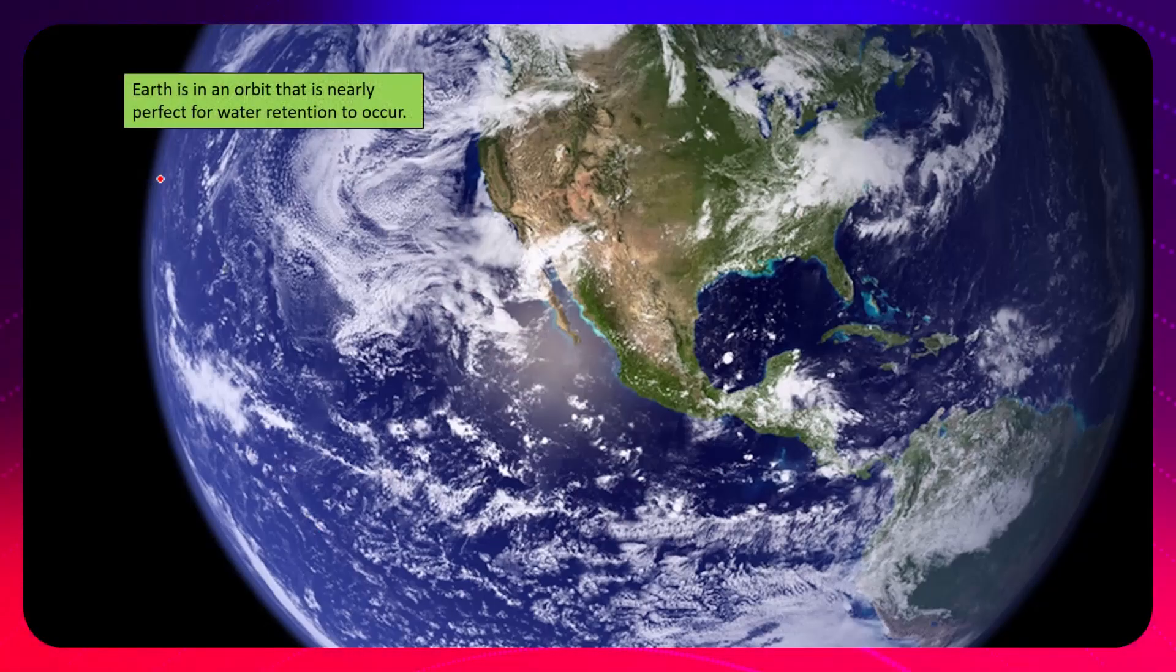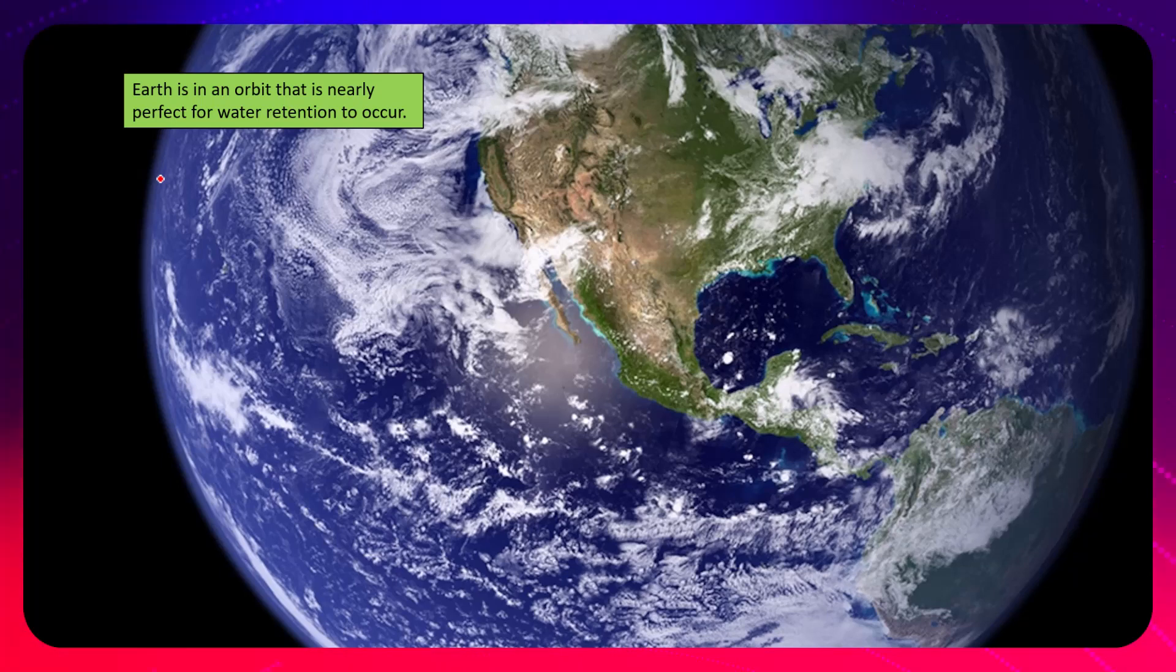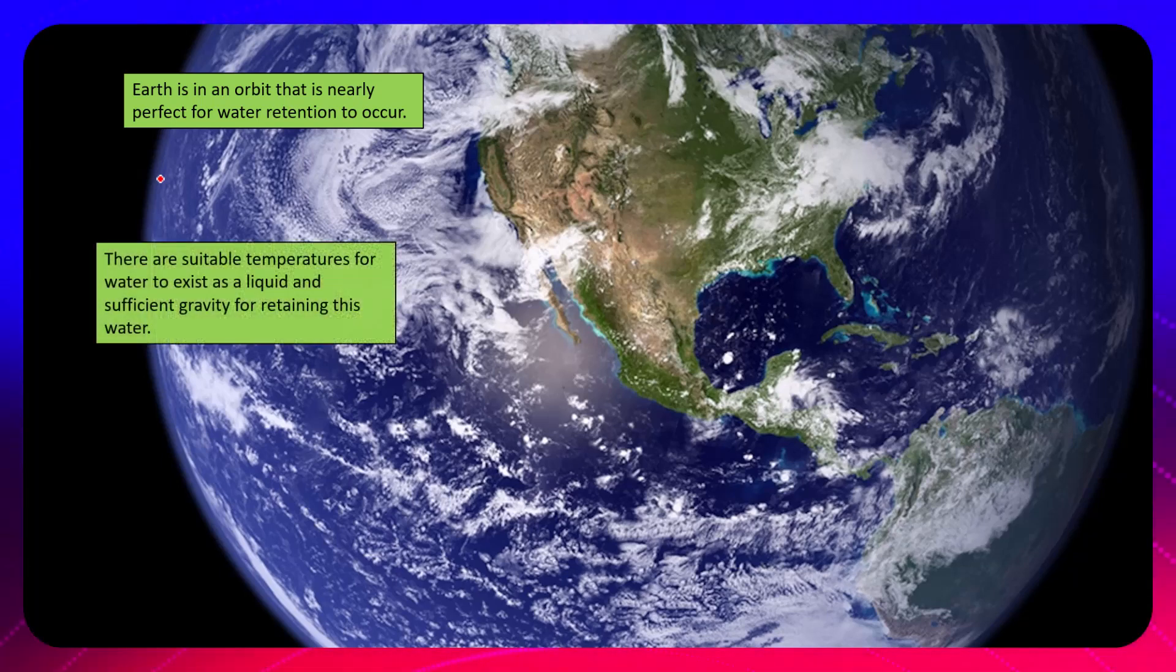So why is Earth so special? Earth is in an orbit that is nearly perfect for water retention to occur. There are suitable temperatures for water to exist as a liquid and sufficient gravity for retaining this water. If the Earth was in a temperature range that was conducive to liquid water but we weren't big enough to have a gravitational pull to hold the water to the surface or on the planet, then providing temperature or sufficient temperatures isn't good enough.